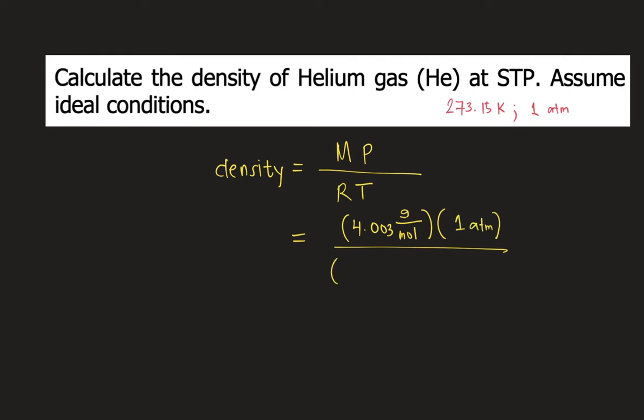R is the gas constant, 0.0821 liter atmosphere per mole Kelvin. And T is temperature. So we have the standard temperature, 273.15 Kelvin.